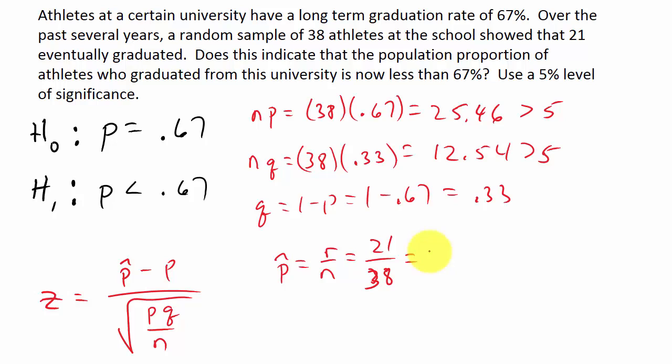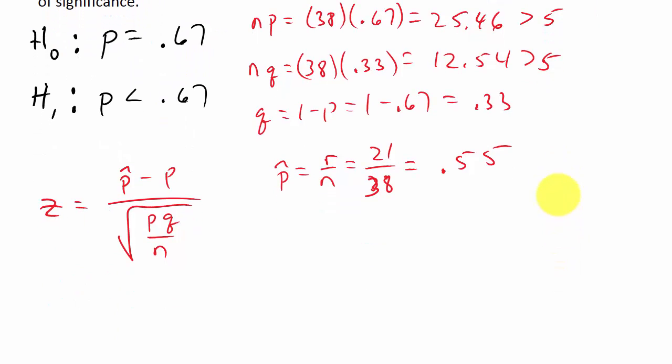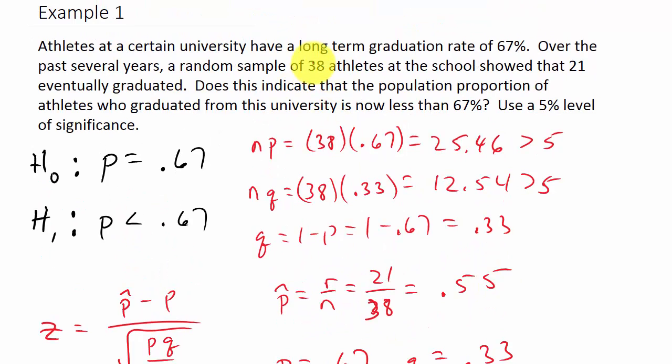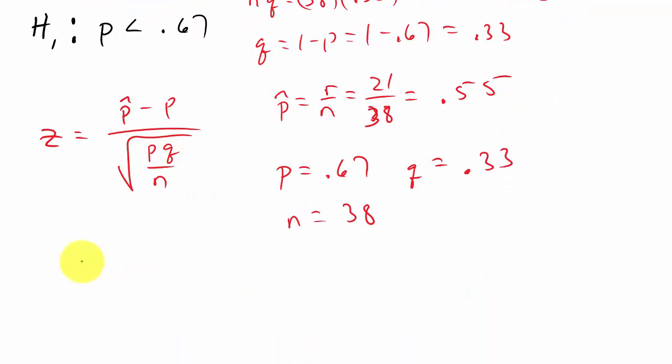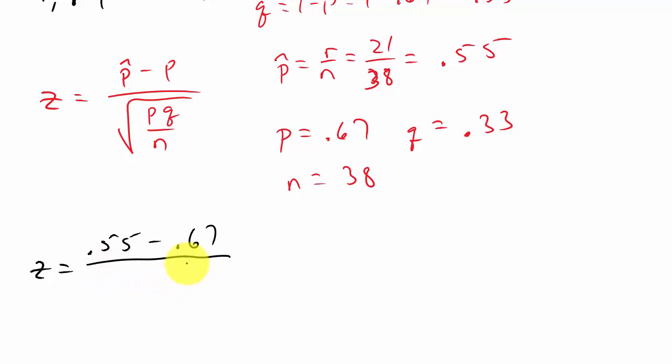So 21 over 38 gives us 0.55, and I'm just going to round it to two decimal places. And we know that P is 0.67, Q we already calculated is 0.33, and N is 38. So we just punch this into our formula, so we get Z is P hat minus P over the square root of P, which is 0.67, times Q, which is 0.33, over N, which is 38.